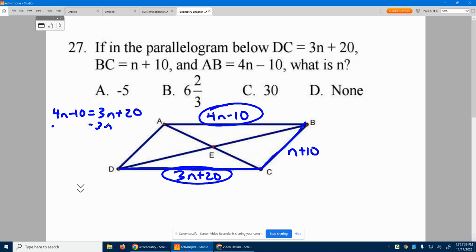Solving for N. Subtract 3N. N take away 10 is 20. Add 10 to both sides. And we get N is 30.